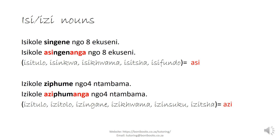The next group is your isi-izi nouns. Isikole singenenge eit becomes isikole asingenanga go eit. So isi class nouns — isidulo, isinkwa, isikwama — all take asi in the negative. Isikole sipumenge fontambama becomes isikole azipumanga. For isi nouns we say azi pumanga.